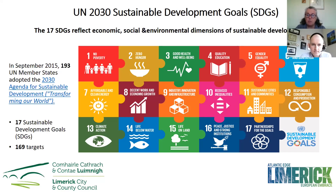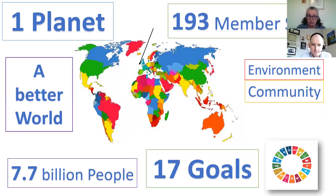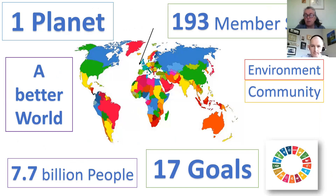Each goal is depicted in a little tile. We have one planet, we're looking for a better world, and there are 7.7 billion people here. The 17 goals try to influence both the environment and the community, and 193 member states have signed up.